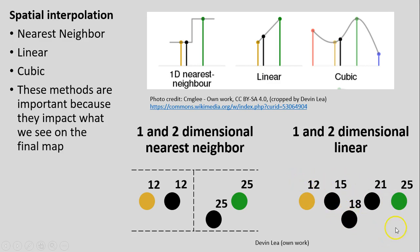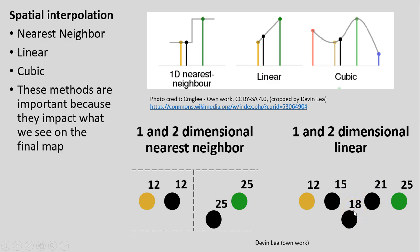In two dimensions with linear interpolation, the value at a given location is calculated by weighting the distance both horizontally and vertically toward each known value — the 12 and the 25 — using a mathematical equation. For example, a location midway might yield an interpolated value of about 18.